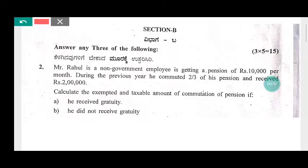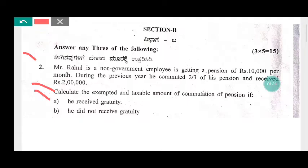In Section B, second question: Mr. Rahul is a non-government employee getting a pension of rupees 10,000 per month. During the previous year he commuted two-thirds of his pension and received rupees two lakh. Calculate the exempted and taxable amount of computation of pension — (a) if he received gratuity, and (b) if he did not receive gratuity.